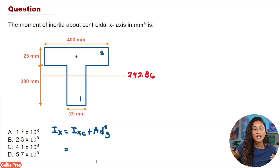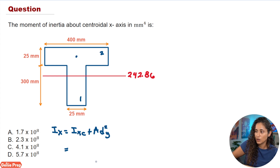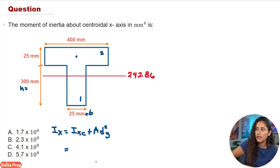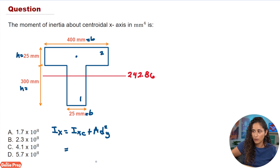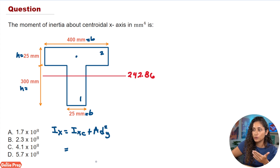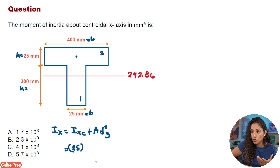Something that also confuses students: what is b and what is h? H is always the height and b is the width. So for bh³ over 12 for shape one, b is 25, h is 300 — we cube h and divide by 12.